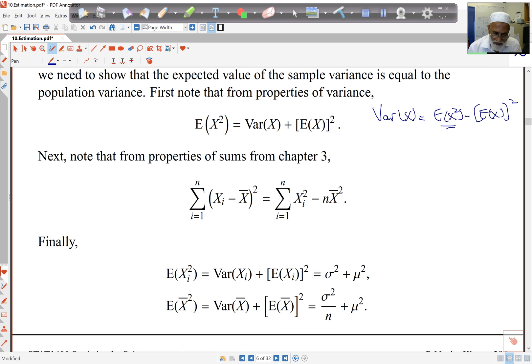And so if I apply the first result to Xi squared, I get E of Xi squared is the variance of Xi plus the mean of Xi squared, which is sigma squared plus mu squared. The same for X bar, it's the variance of X bar plus E of X bar squared. The variance of X bar is sigma squared upon n, we know that from before, and the mean of X bar is mu squared.